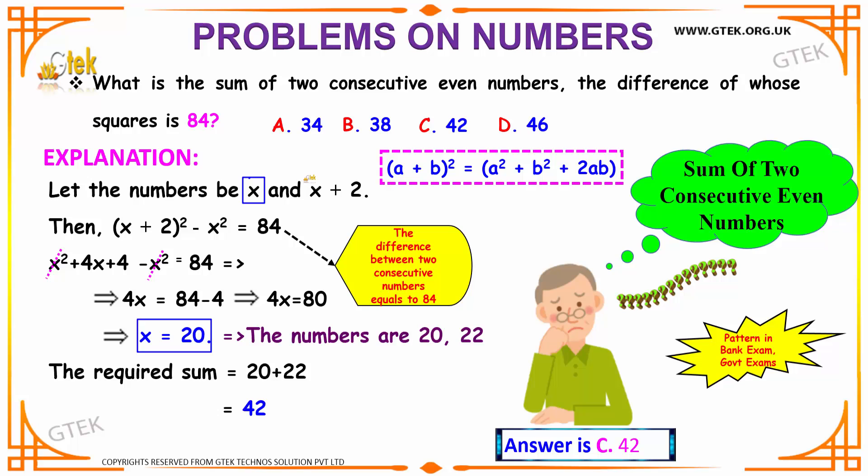So your x plus 2 is nothing but 20 plus 2 that is 22. Hence your numbers are 20 and 22.